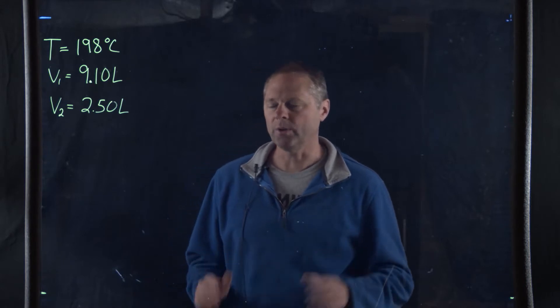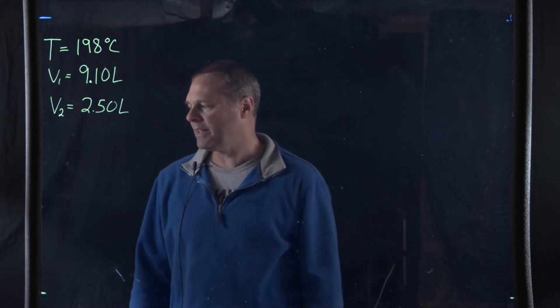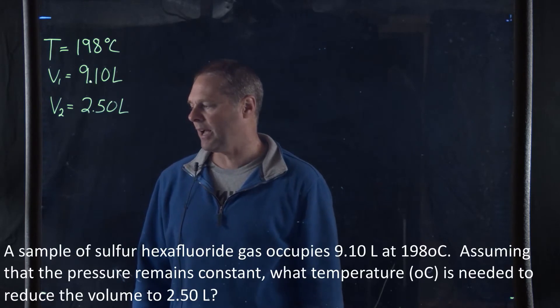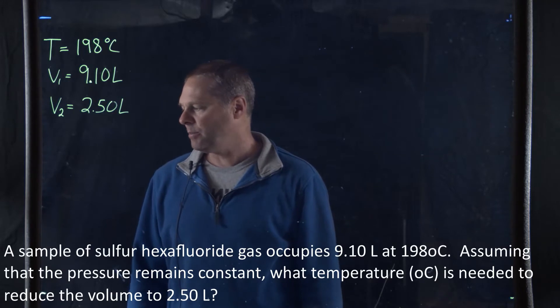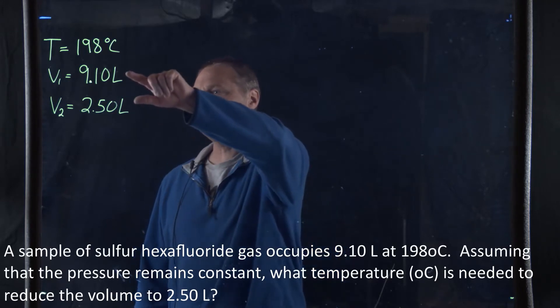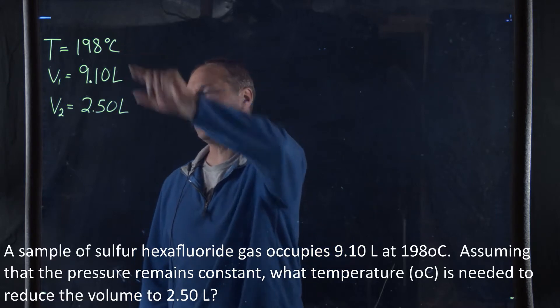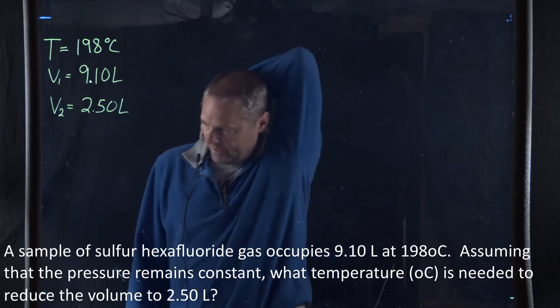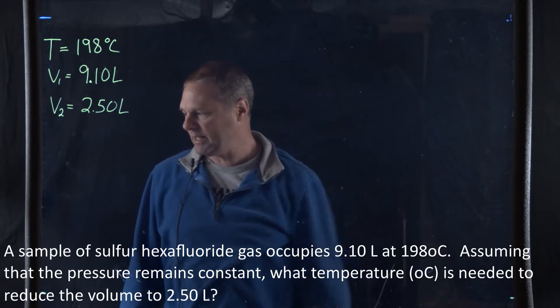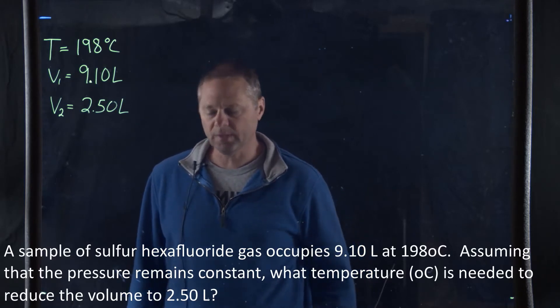We'll talk about that later when we get to real gases. But the first problem states a sample of sulfur hexafluoride gas, that's going to be SF6, occupies 9.10 liters of volume and has a temperature of 198 degrees Celsius. Assuming that the pressure remains constant, what temperature in degrees Celsius is needed to reduce the volume to 2.5 liters?